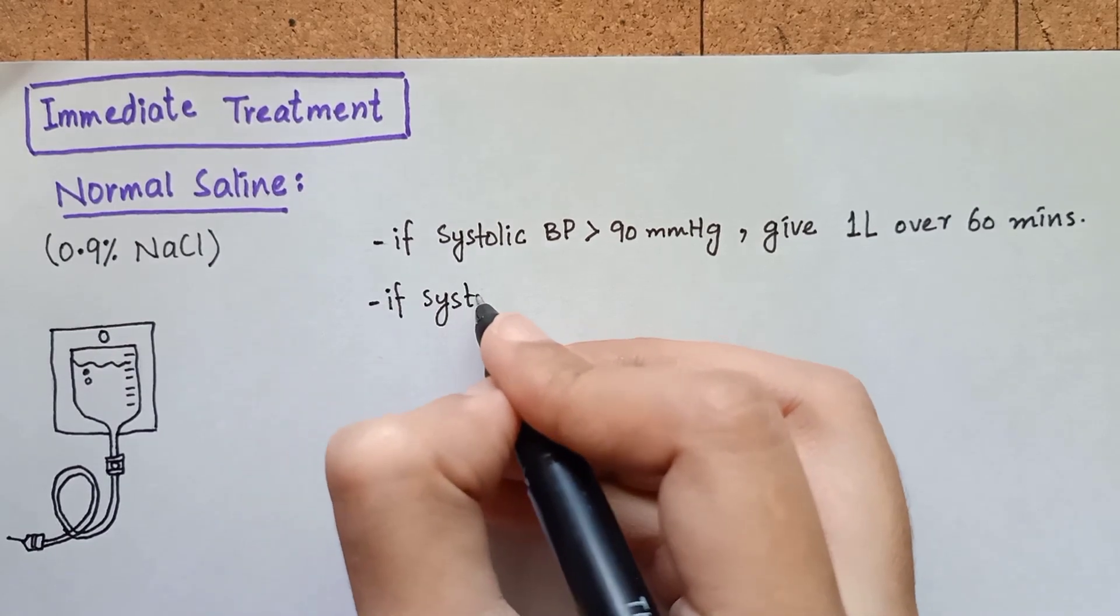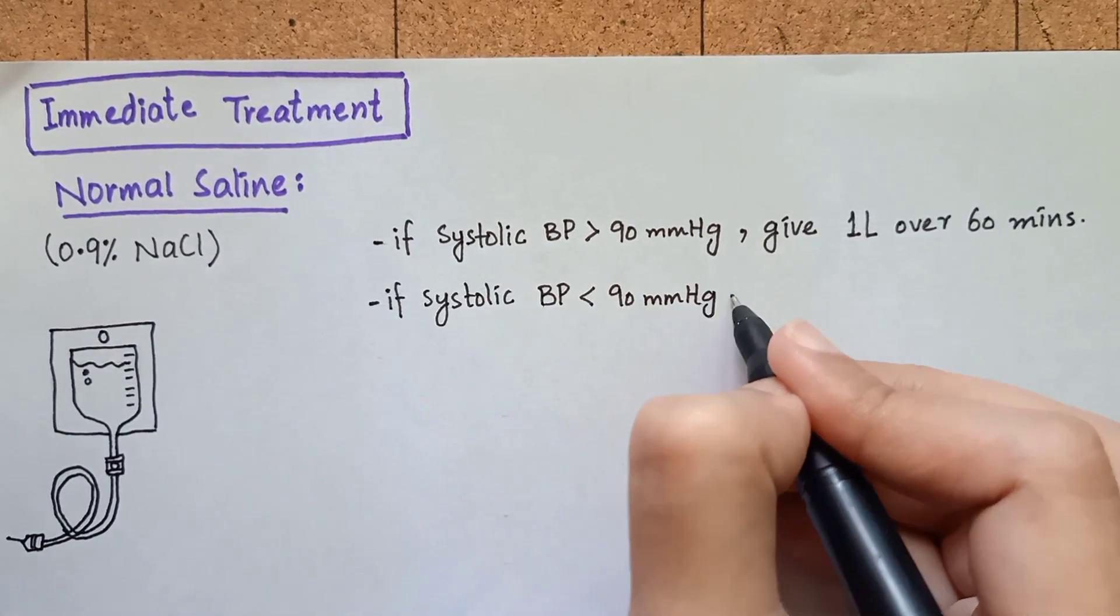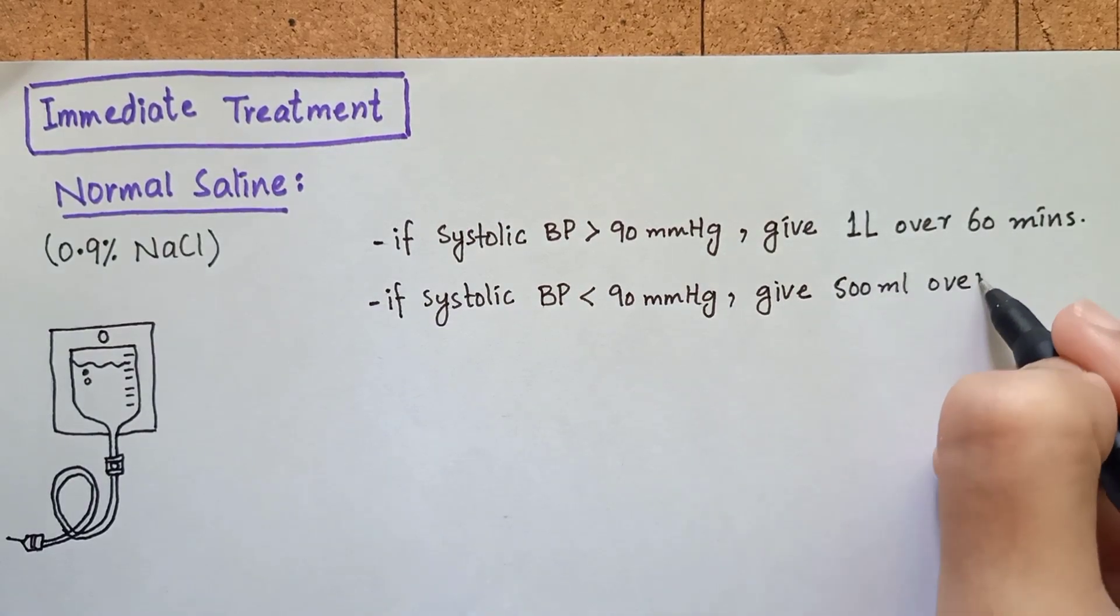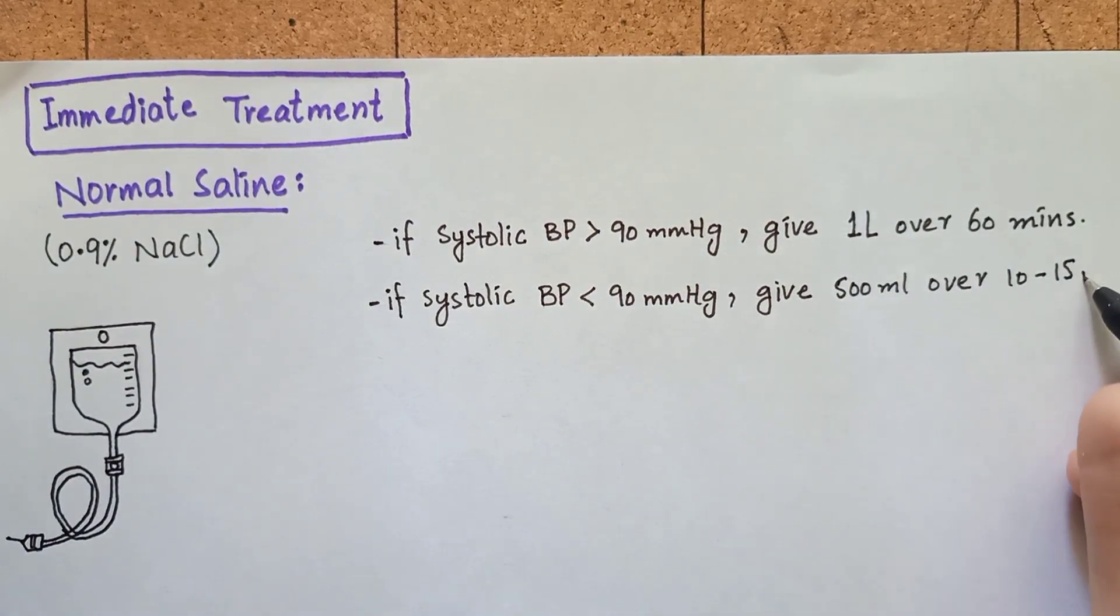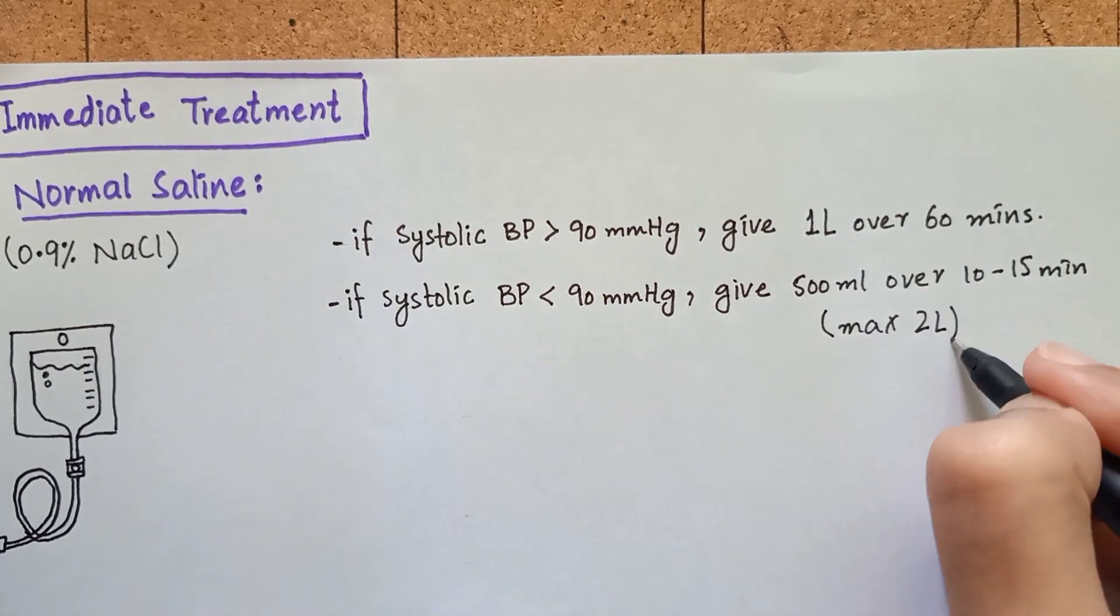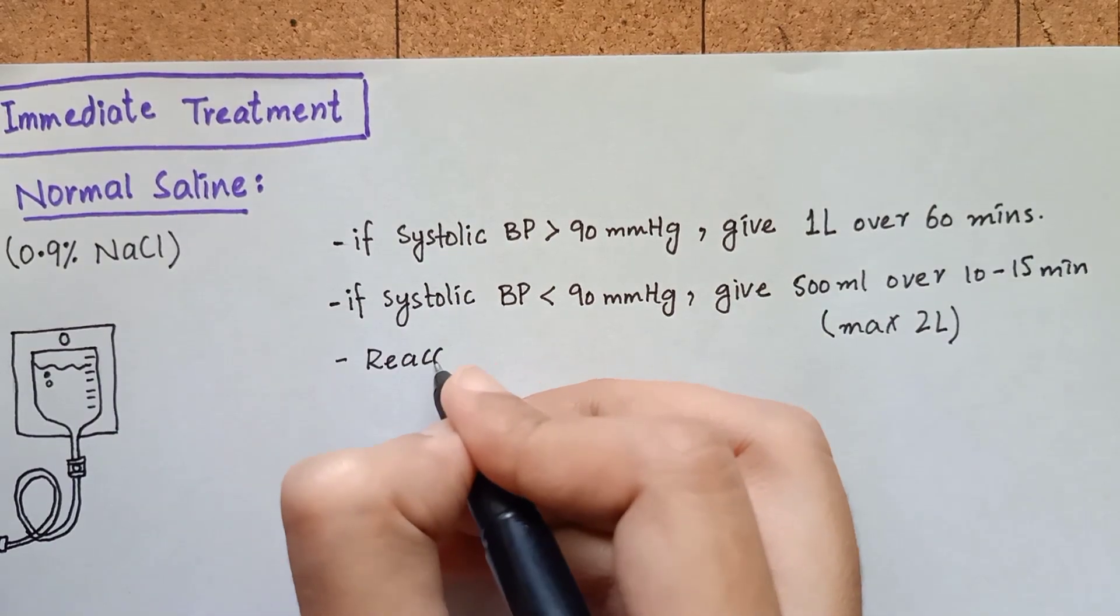If systolic blood pressure is less than 90 millimeter of mercury, then you will give repeated bolus of 500 ml of normal saline over 10 to 15 minutes, maximum 2 liter of normal saline, and then you will reassess the blood pressure.